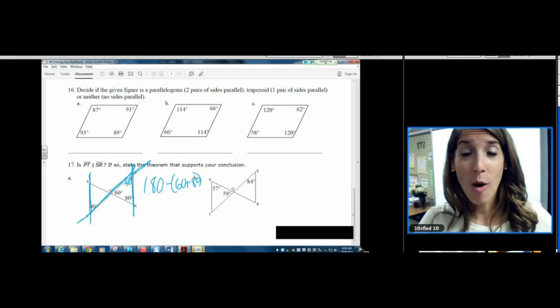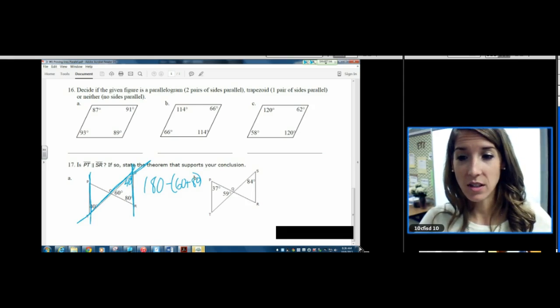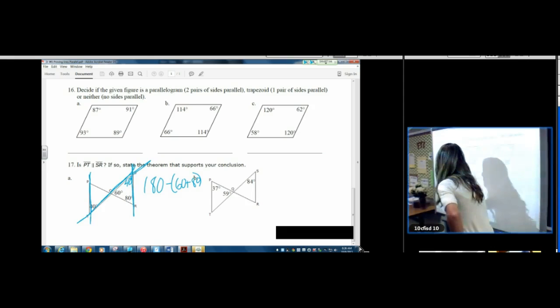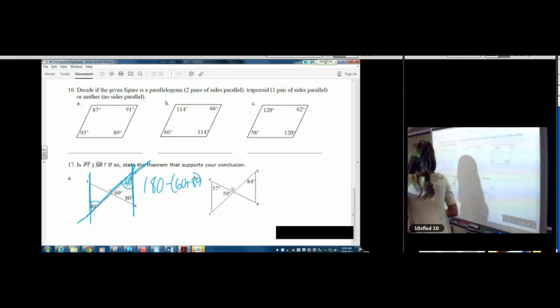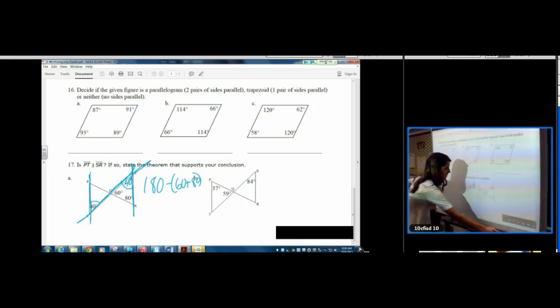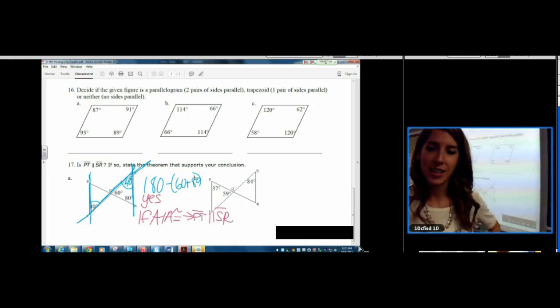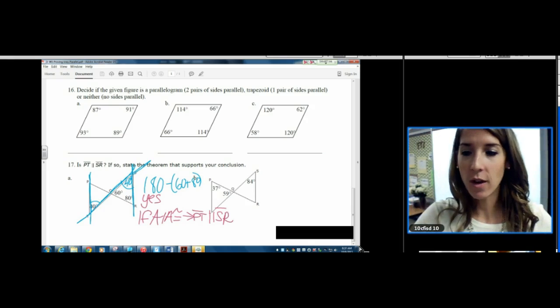I spy some alternate interior angles. Do you see that? Alternate interior, forty, forty. So our statement is, well, first of all, the answer is yes. And our statement is, if alternate interior angles are congruent, then PT is parallel to SR. The theorem says that alternate interior angles need to be congruent for our lines to be parallel.